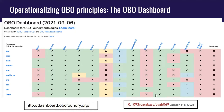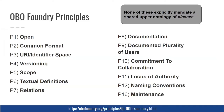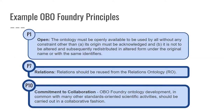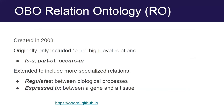These are the OBO principles themselves. You might notice none of them actually explicitly mandate use of a shared upper ontology. I want to focus on a couple: one is the principle of having shared relations. Even though we've not historically mandated a shared upper ontology of classes, we've always mandated use of the Relation Ontology for connecting terms within or across ontologies. I'll also talk about the principle of commitment to collaboration, which is key to OBO.